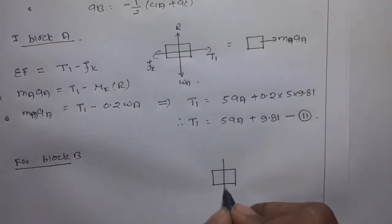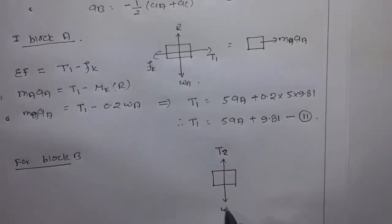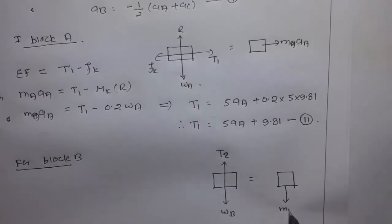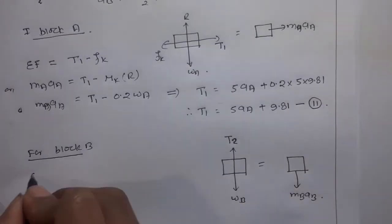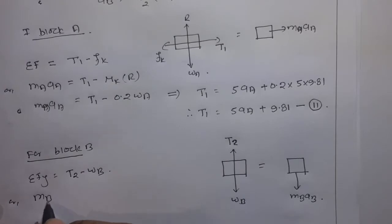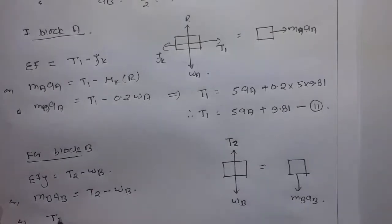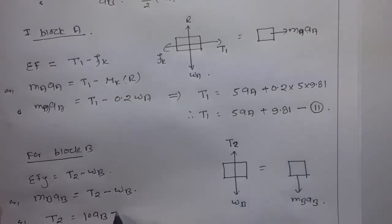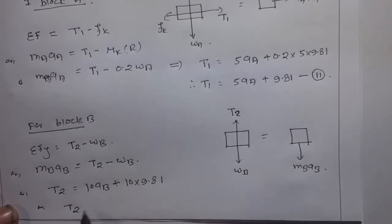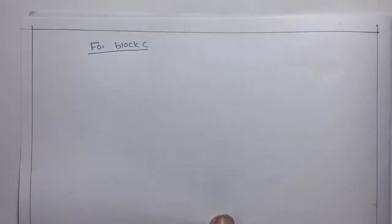For the free body diagram of block B: tension T2 acts upward and weight WB acts downward. Applying Newton's second law in the vertical direction: MB·AB = T2 - WB, so T2 = 10AB + 10 × 9.81, giving T2 = 10AB + 98.1. This is Equation 3.